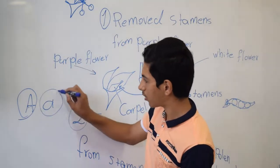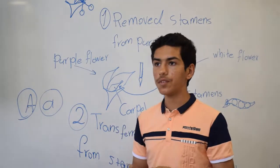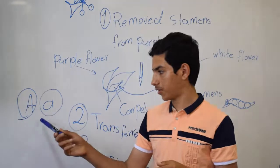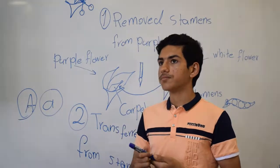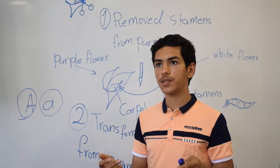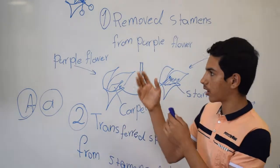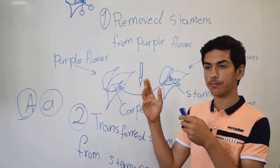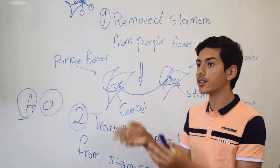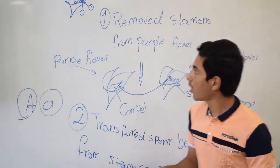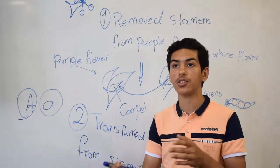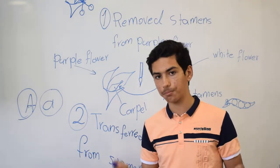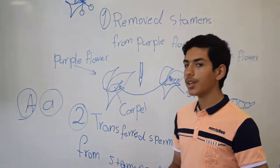We can make three different genotypes with A and a. The phenotype is, for example, the color of the flower of the pea plant, the size of the pea plant, the shape of the pod, and the color of the seed.